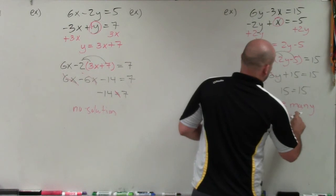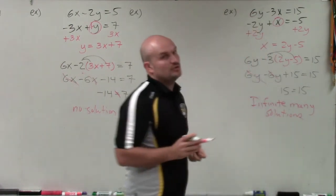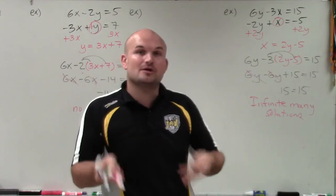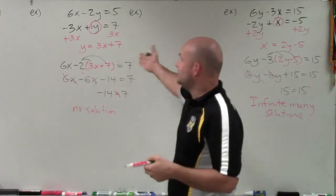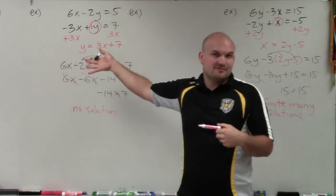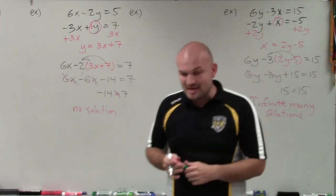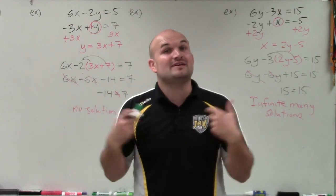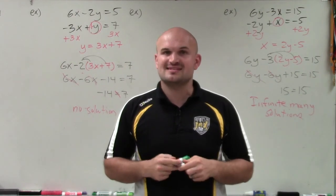And you can verify this again. If you were to solve both these equations, put them in slope-intercept form, you would notice they're exactly the same equations, exactly the same slope, exactly the same y-intercept, where these would have the same slope but different y-intercepts. So there you go, ladies and gentlemen. That is how you solve a system of equations using substitution when you have infinite many solutions and no solutions. Thanks.